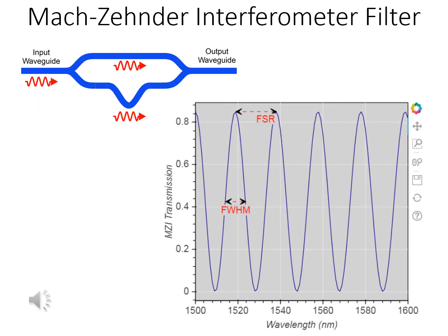When we observe the transmission of an unbalanced Mach-Zehnder interferometer, we observe that it transmits light at some wavelengths and not others, as shown in the chart. The device is an optical filter.